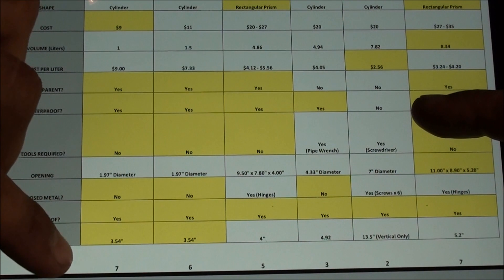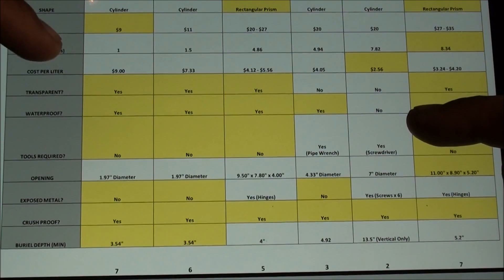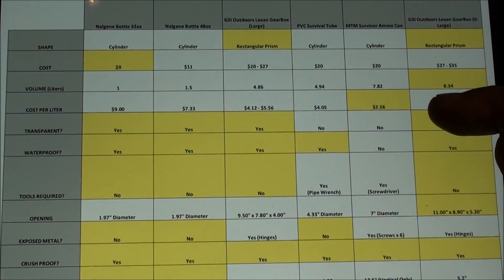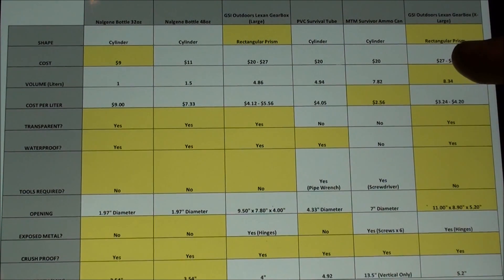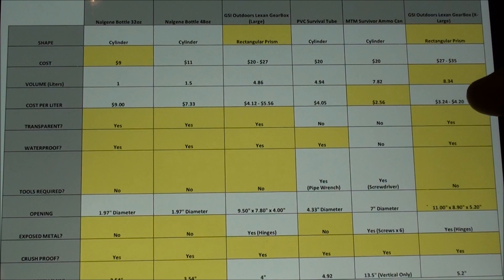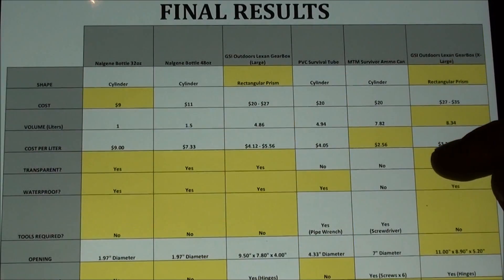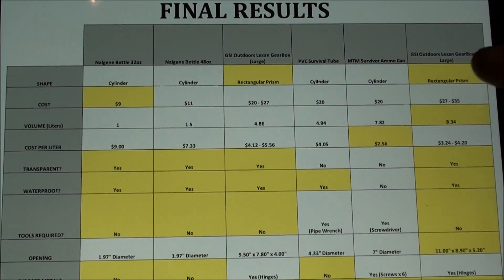So I tallied all of them up and I have little numbers here for the amount of yellow highlights that they had. So the winners as far as the tally goes is the Nalgene water bottle one liter version and the GSI outdoors Lexan gearbox extra large both with seven of the yellow highlights. So for this particular video series I found that the best survival cache container that passed all of my tests or that did the best with all the categories was the GSI outdoors Lexan gearbox extra large. It is the most expensive out of the ones that were tested but I found that it was a rectangular prism which is very easy to store items in. It has the largest volume with regard to liters at 8.34. It has the second best cost per liter especially when you find it on sale on Amazon. It's transparent. It's waterproof. There's no tools required to open it. It has the largest opening to it. It does have some exposed metal but maybe you could put some grease or something on there to help protect those over time. And it is crush proof and it has a very minimal burial depth. So I found that the GSI outdoors Lexan gearbox extra large was the best one out of the bunch for this particular test scenario. Please let me know if you disagree with those results and those are the final results.